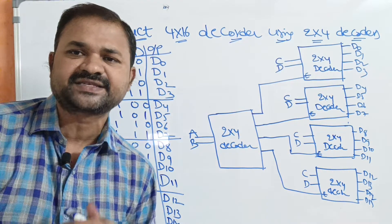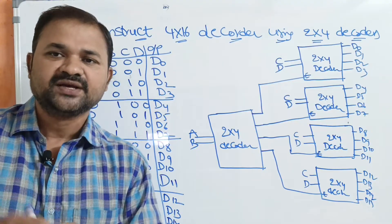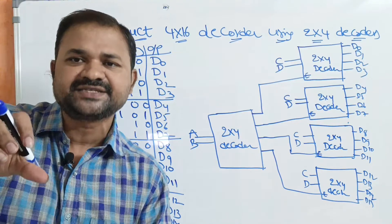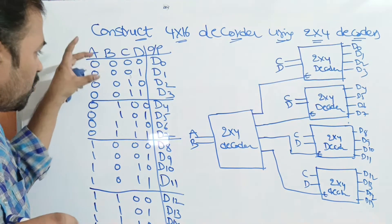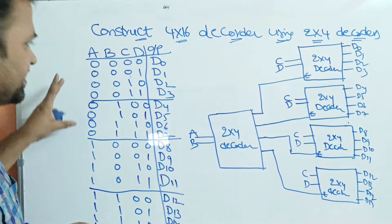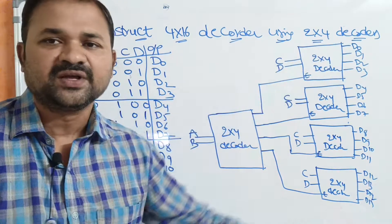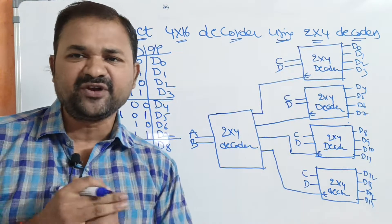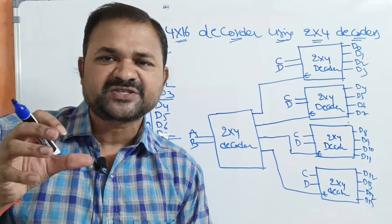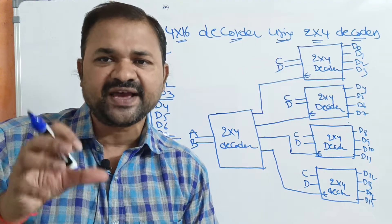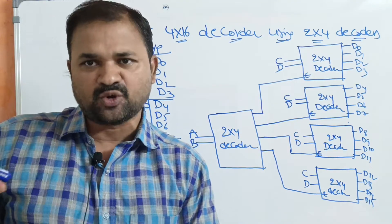Likewise, all 1s means D15 is the output. Now, to produce this 4 by 16 output with the help of 2 by 4 decoders, we totally require 5 2 by 4 decoders.